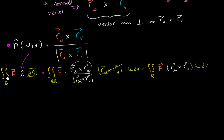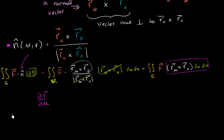Now, the last thing I want to do is explore another way you'll see this surface integral written. It all comes from rewriting this chunk in a different way, but hopefully it gives a little more intuition of what this is saying. So I'm going to rewrite that chunk using slightly different notation. The partial of r with respect to u — taking the cross product with the partial of r with respect to v — represents very small changes in our position vector given a small change in u or v. And then we multiply that by du dv.